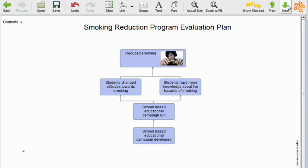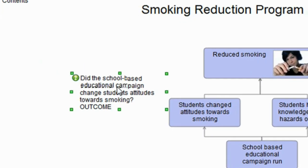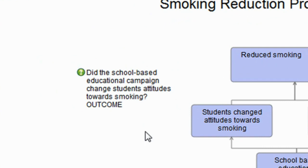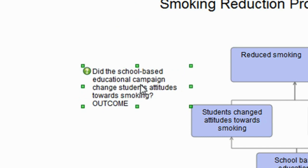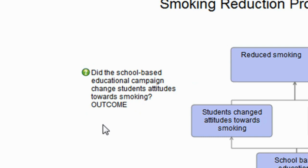Now, what I've done is now started to map onto that my evaluation question. So I'm inserting an evaluation question here. Did the school-based educational campaign change students' attitudes towards smoking? And I've put that, and I'm just visually moving that and putting that next to reduced smoking because that's the overall objective or outcome of the program. And this is actually what we call an outcome or an impact evaluation question, so I've just actually popped that at the bottom of the question.